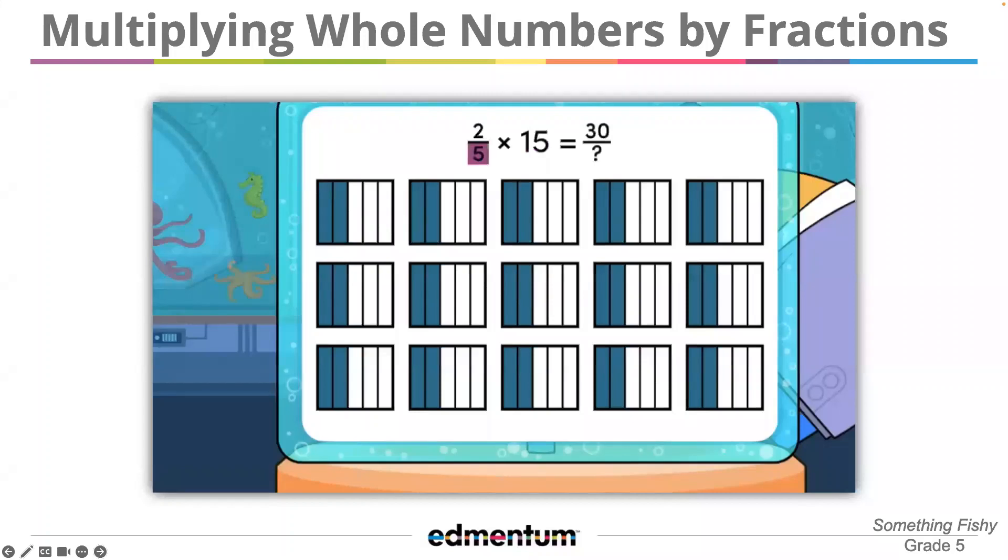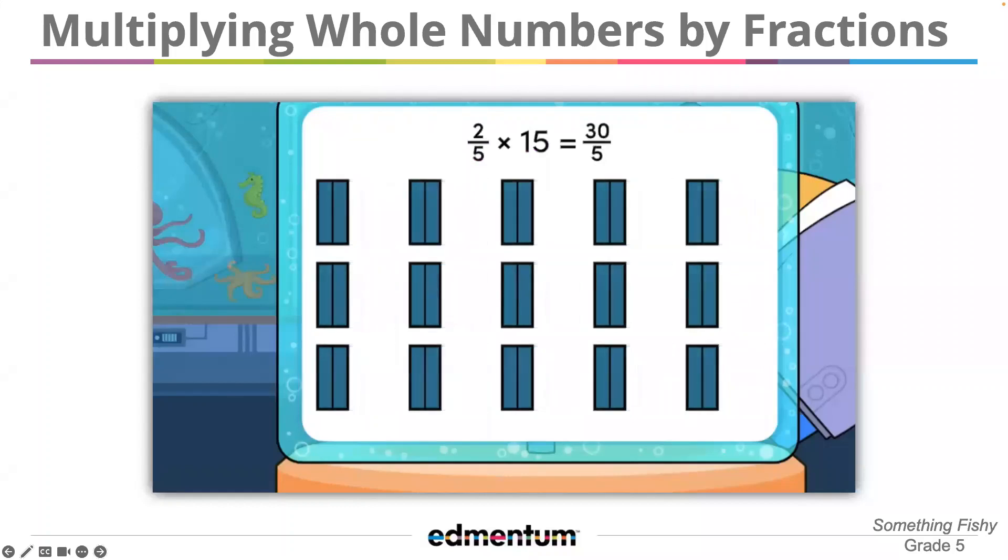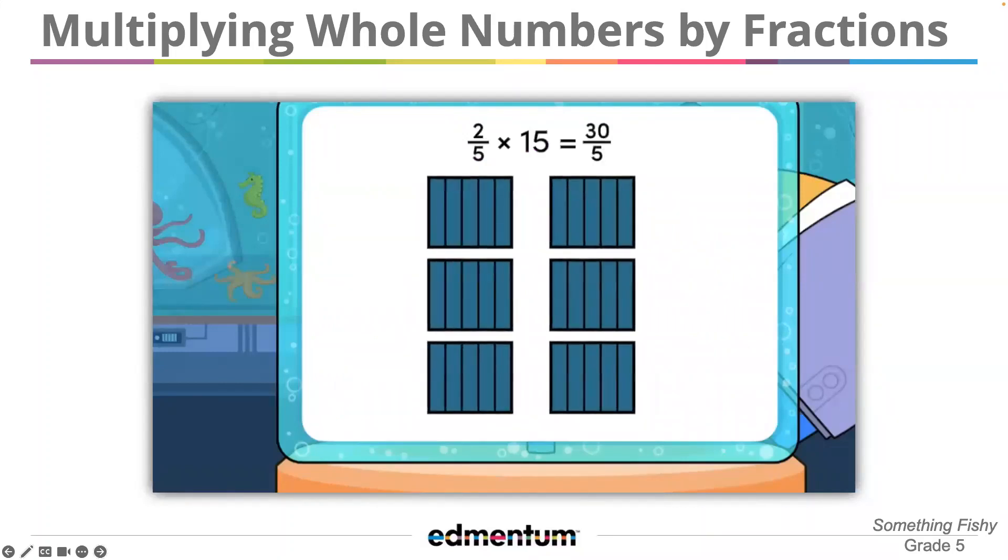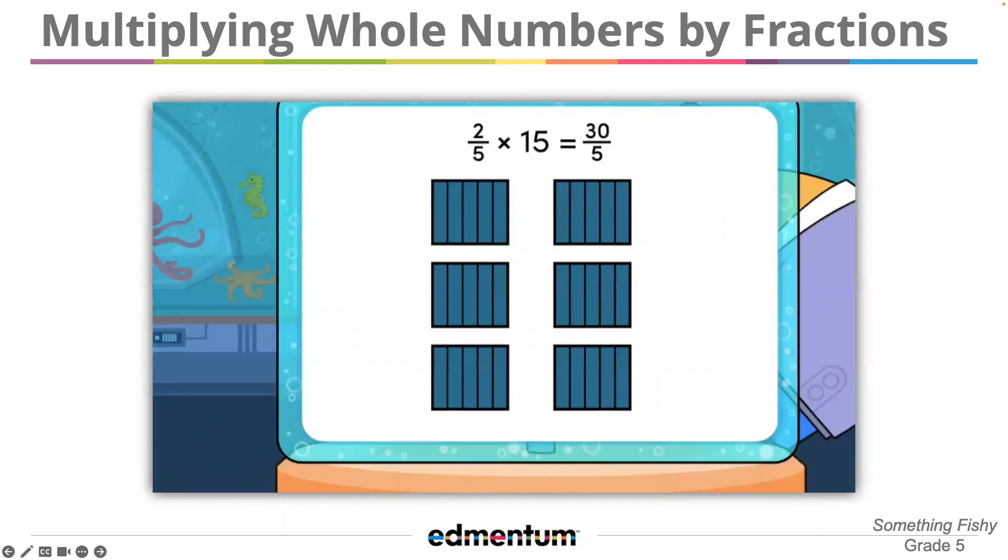Each part represents a fifth, so we have 30-fifths. I know that five-fifths is a whole, so I'll put the shaded parts into groups of five-fifths. That's six wholes! This model shows that two-fifths of 15 is six.